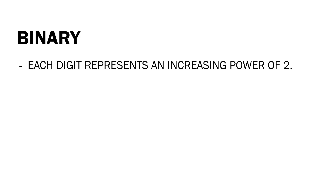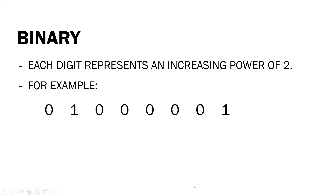For example, take a binary number: 0 1 0 0 0 0 0 1. The rightmost digit in a binary is called the LSB or the Least Significant Bit, which has a positional value of two raised to zero. Moving left, the next digit's positional value grows to two raised to one, two raised to two, and so on.